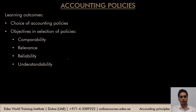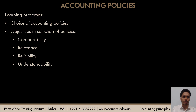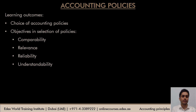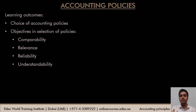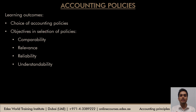In this video, we are going to study about what are accounting policies, what choices do businesses have when deciding on the accounting policies, examples of areas where choices are available, and finally what are the objectives to be kept in mind when deciding on the accounting policies. If you have a choice of A and B, how would the business decide which policy is best for the presentation of your financial statements? You'll have to keep these objectives in mind, and the policy that helps you achieve these objectives is the right policy for your business.